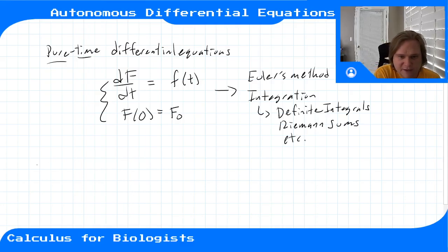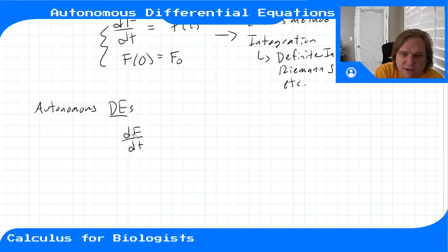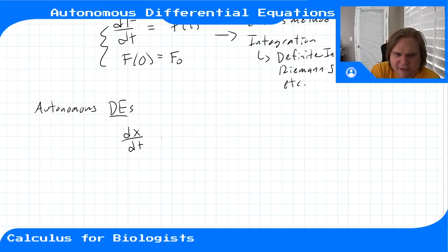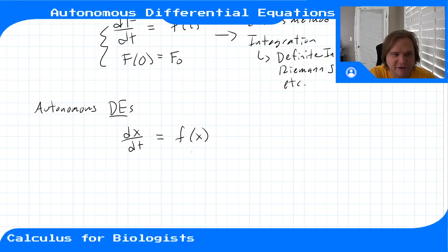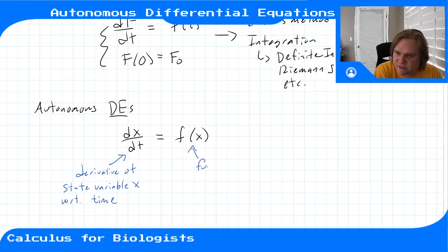Now we're going to talk about autonomous differential equations — autonomous DEs. The only difference here is that instead of the differential equation depending purely on time, now it doesn't depend on time at all. It depends on the variable that you're taking the derivative with respect to. So the derivative with respect to time is a function of x — not a function of time.